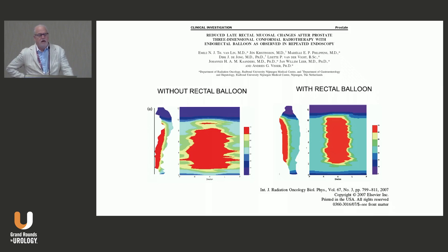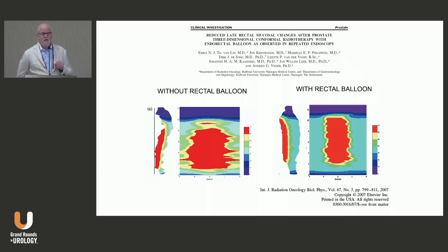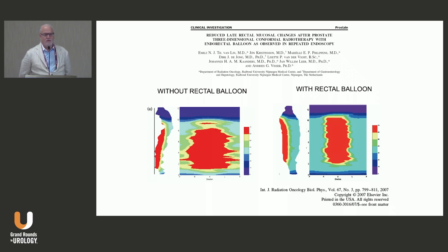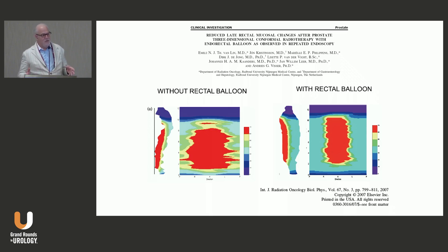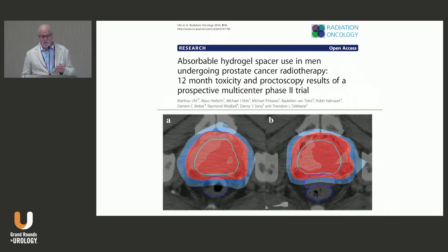Here's another slide comparing the dose distribution with and without the rectal balloon relative to the prostate. However, a key pitfall of this approach is that while you're pushing the posterior part of the rectum away, you are actually pushing the anterior part into the higher dose region. We prefer to treat patients with a completely negative rectum, pulling it away from the prostate entirely—so expanding it is partially beneficial but the anterior portion ends up receiving higher dose.